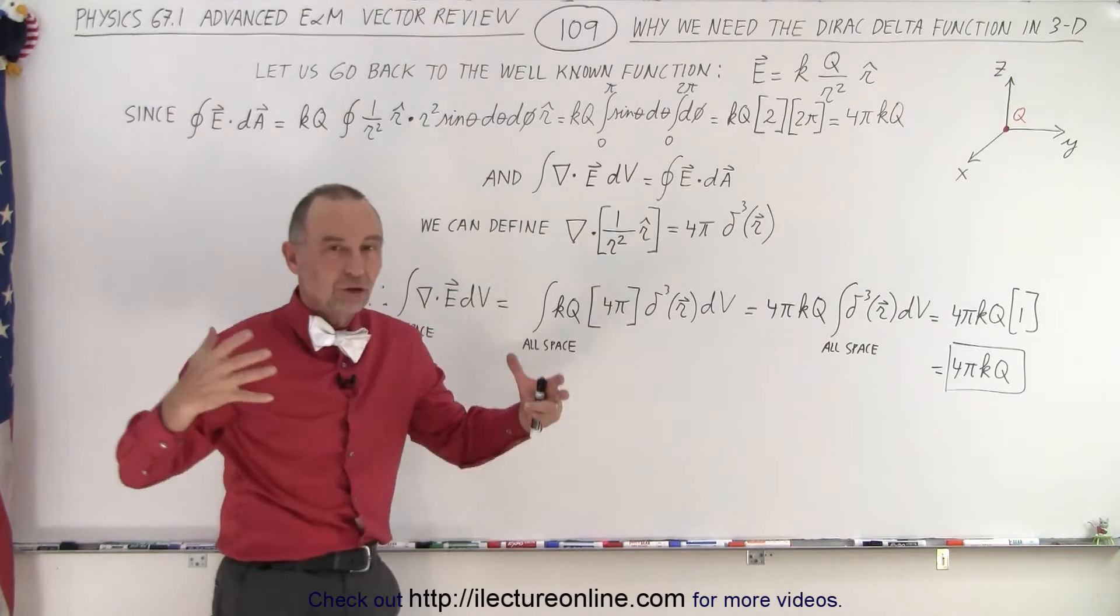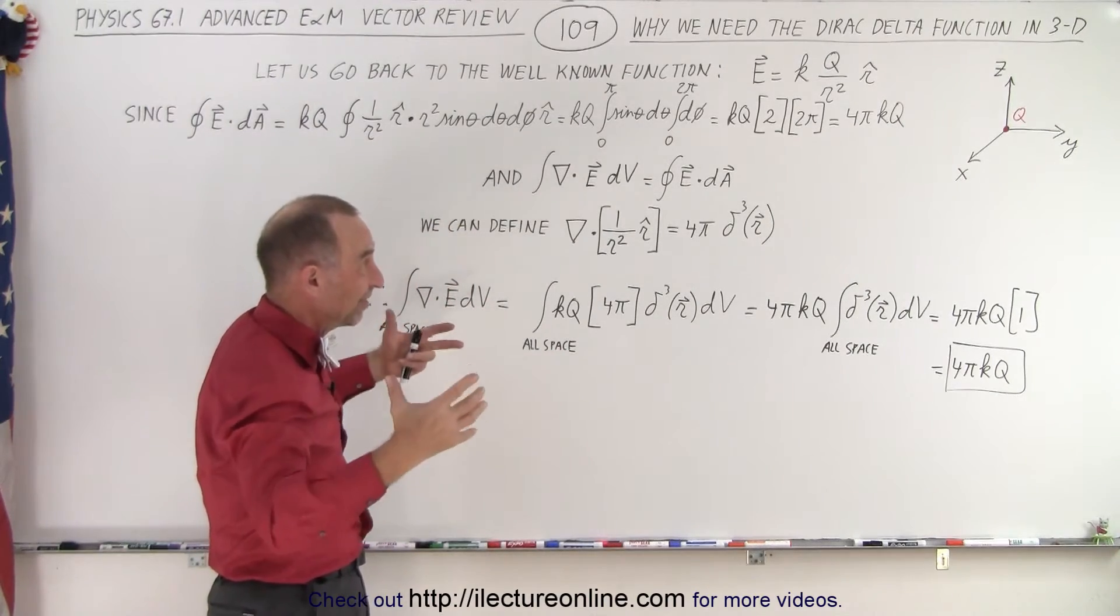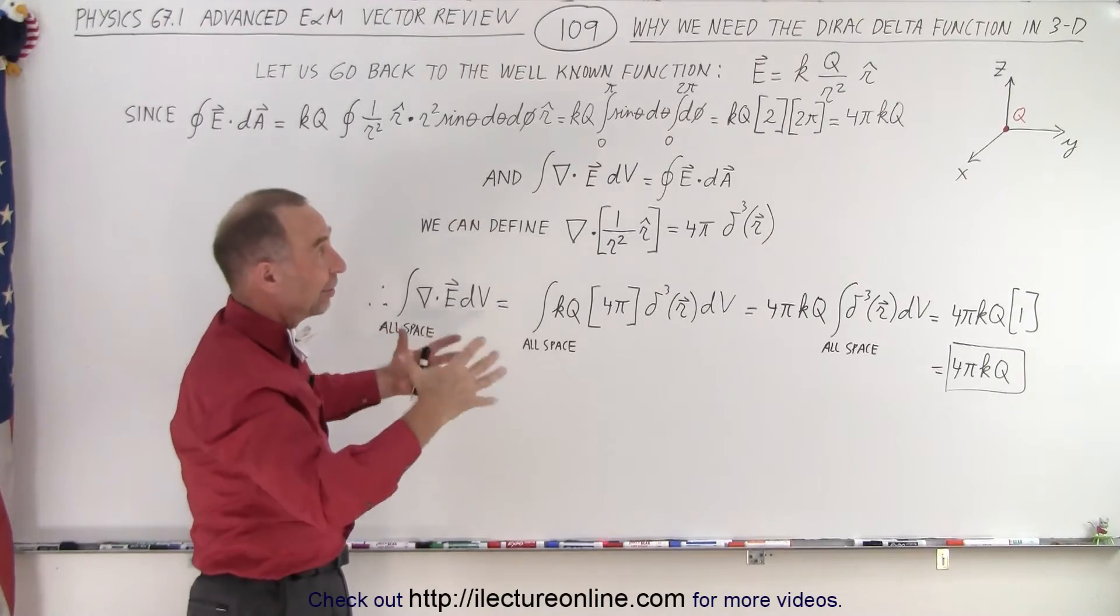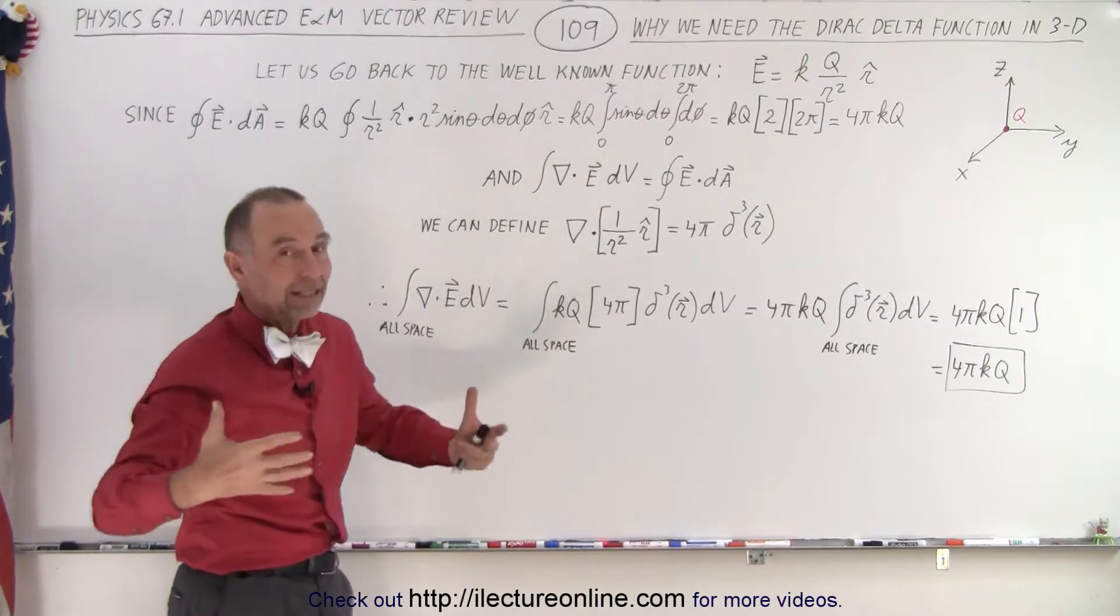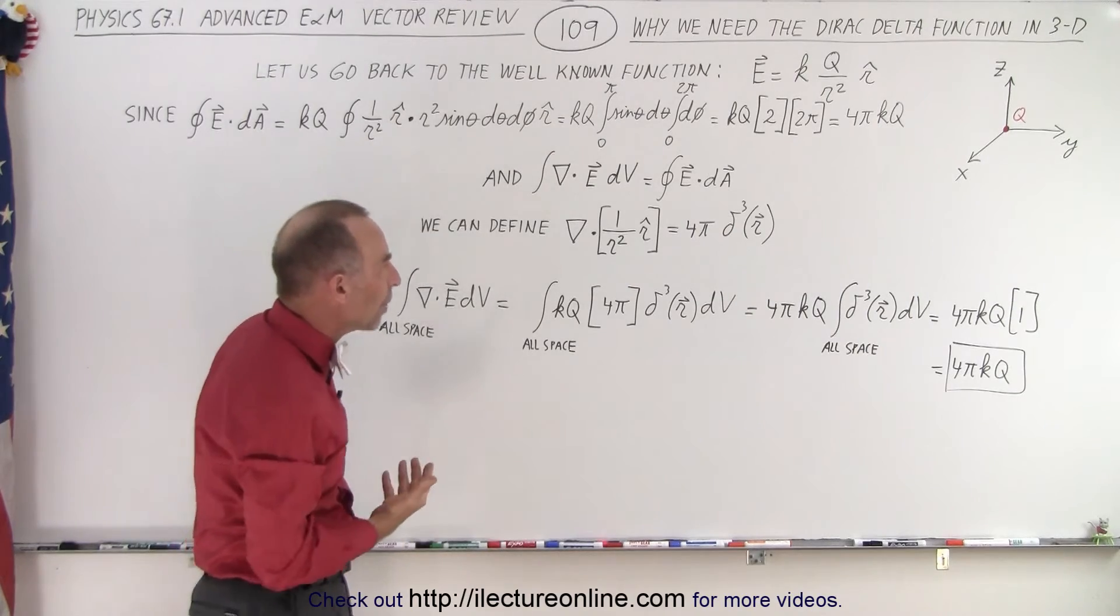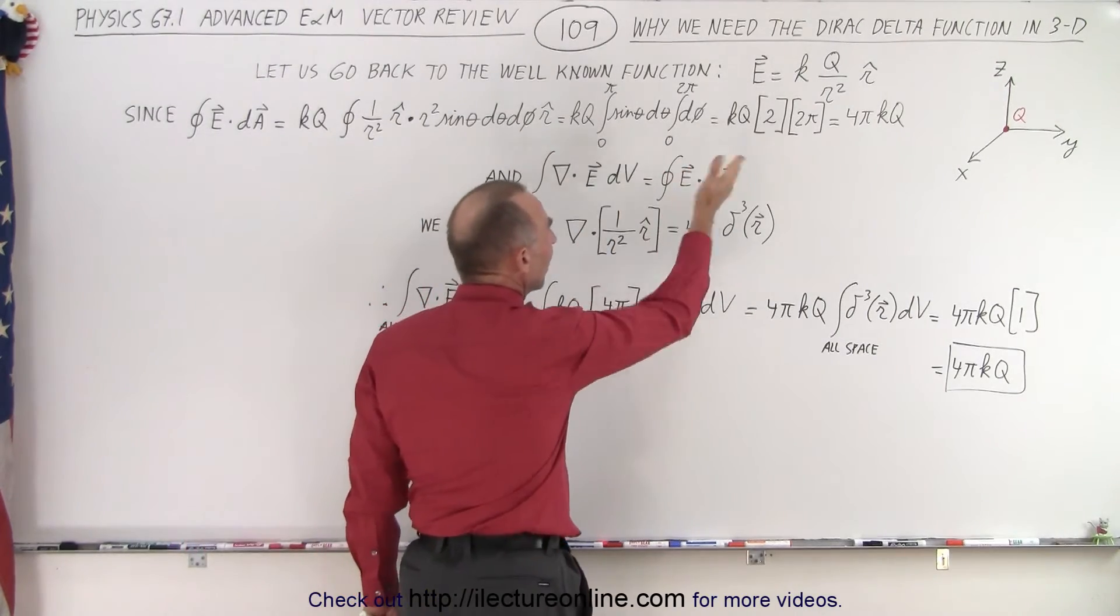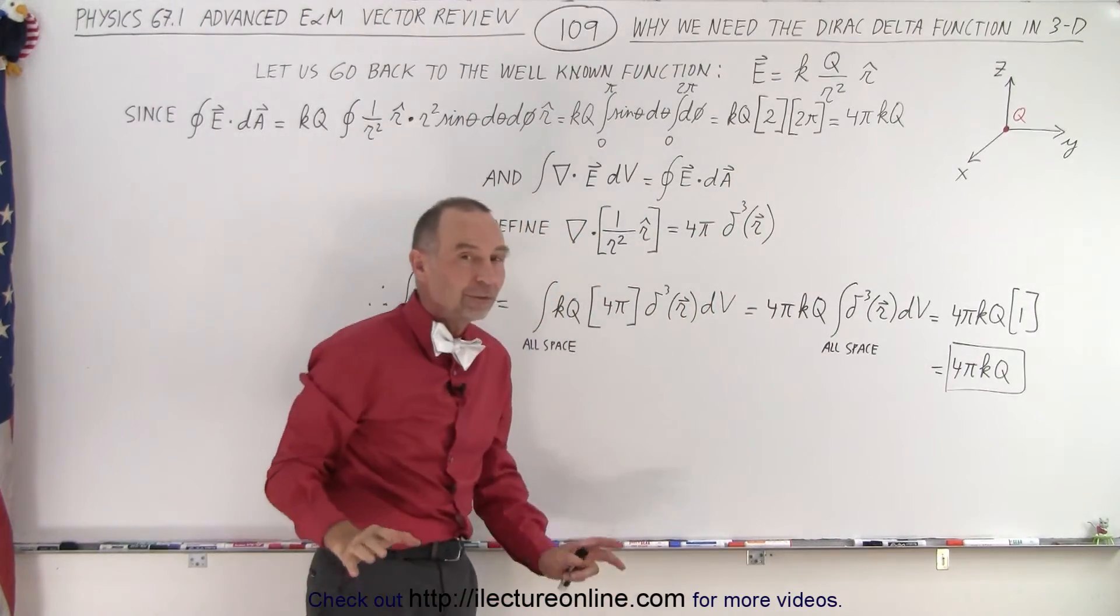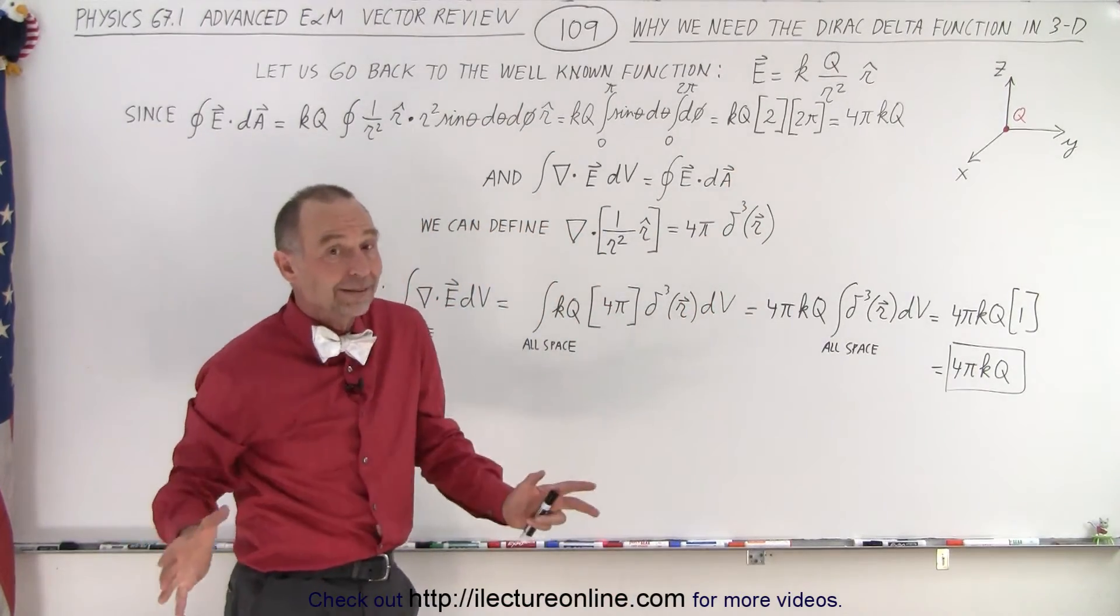We had to do that because we had a charge distribution which was infinite at x, y, and z equal to 0 and 0 everywhere else, which is exactly the definition of the Dirac delta function. So we have to somehow express the charge distribution in terms of the Dirac delta function because that's the only way it would make sense.